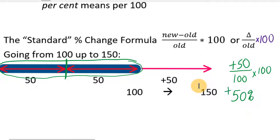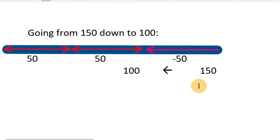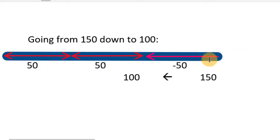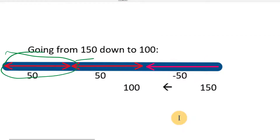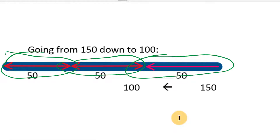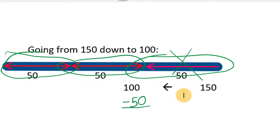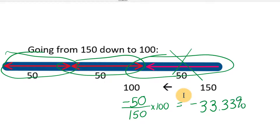The problem happens when we go from 150 back down to 100. Starting with 150, we can divide that into three 50s. Going from 150 down to 100 means getting rid of one of those three 50s — going down by one third. So the formula gives us: negative 50 divided by the original 150 times 100, which simplifies to one third times 100, or down 33.33 percent.